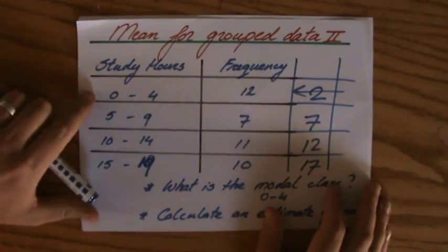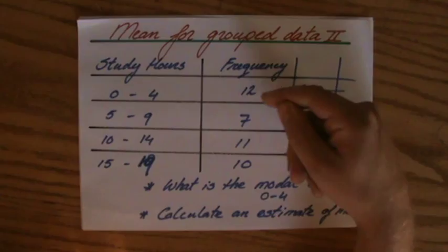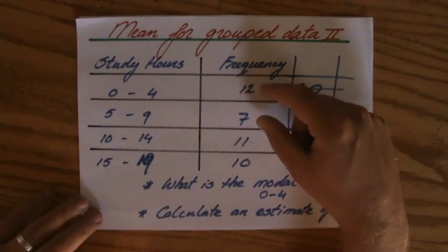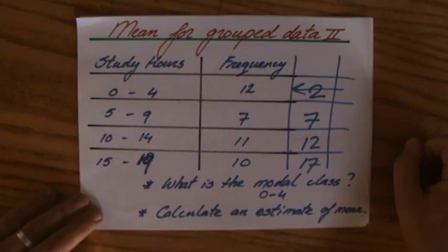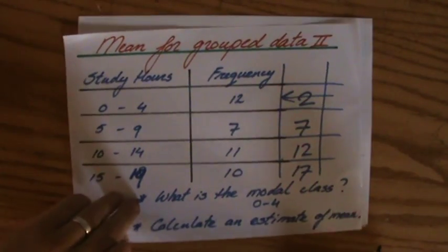So how many students did I ask how long they study each week? Well, 12 here, 7 there, so that's 19, 20, 30, 40 students. So I've asked 40 students.